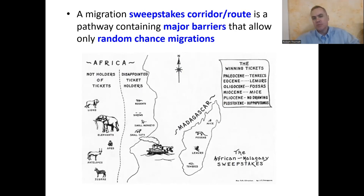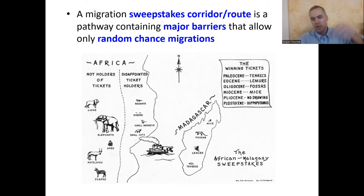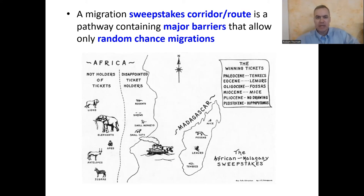They believe the lemur — now many different types — along with other species that ended up in Madagascar, somehow fell into natural rafts that then floated across. It's amazing not only that they fell in, but that they stayed in and survived the journey. This theory is called the sweepstakes corridor — 'sweepstakes' because it's just luck, just random chance, who fell into the natural boat and who ended up on the other side.